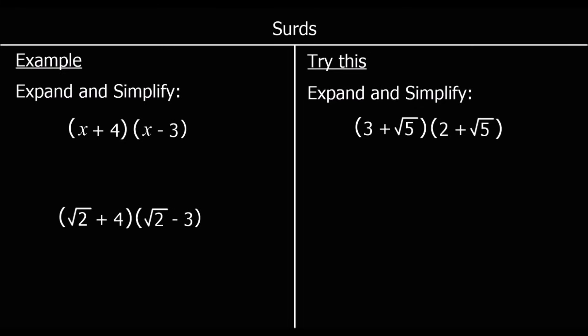When we expand and simplify double brackets, we multiply both the terms in the first bracket by both the terms in the second bracket. Here we've got x plus 4 times x minus 3. So we multiply x by both the terms in the second bracket and we multiply 4 by both the terms in the second bracket.